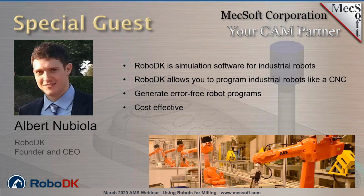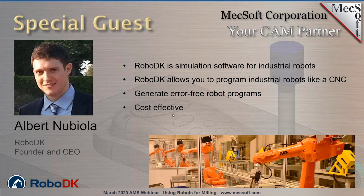RoboDK is a simulation software for industrial robots — you can simulate robot arms and generate robot programs in a user-friendly way. Among other things, RoboDK allows you to generate programs for robot machining. In this webinar, we're showing how to convert Macsoft CAM projects like RhinoCam into robot programs. RoboDK offers a cost-effective way to generate error-free robot programs, avoiding singularities, axis limits, and collisions. Everything we're going to show today can be done with the RoboDK Professional license, which costs $3,500 and can be purchased online.